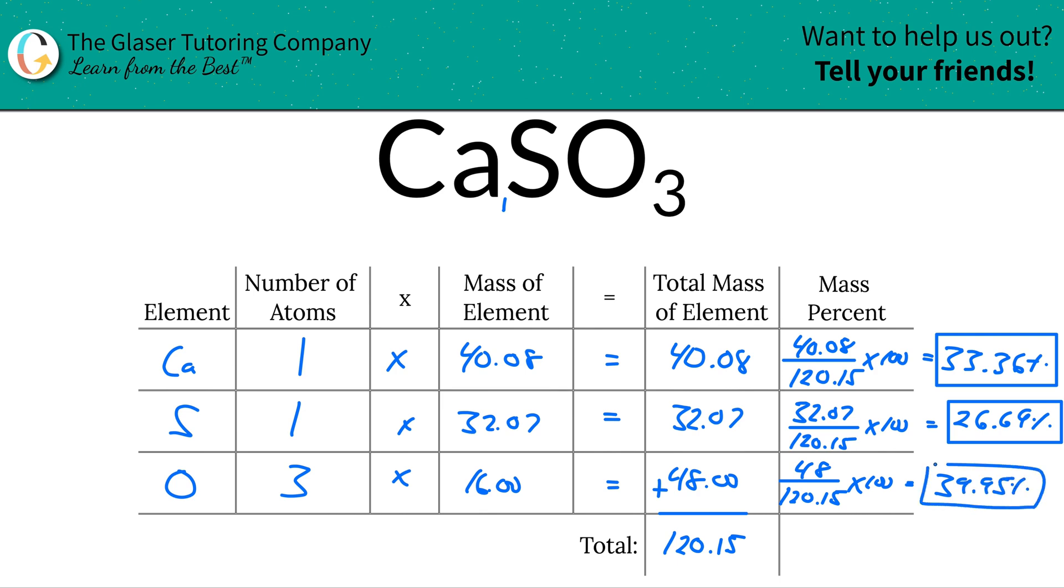And what should happen is you should sum these together, and it should work out to be 100%. Just a nice little way to check to make sure you're good. If you're rounding some of these numbers, it might not work out to be identically 100, but if you added the exact answers up, it would be exactly 100%. Thanks so very much for tuning in. I do hope that helps. Now you know how to solve for the percent composition of calcium, sulfur, and oxygen in calcium sulfite. We'll see you in the next video.